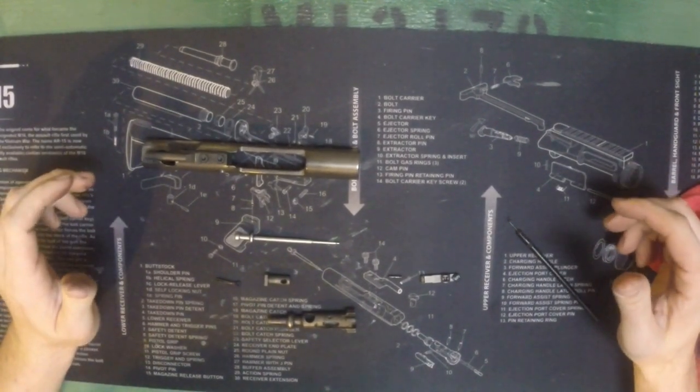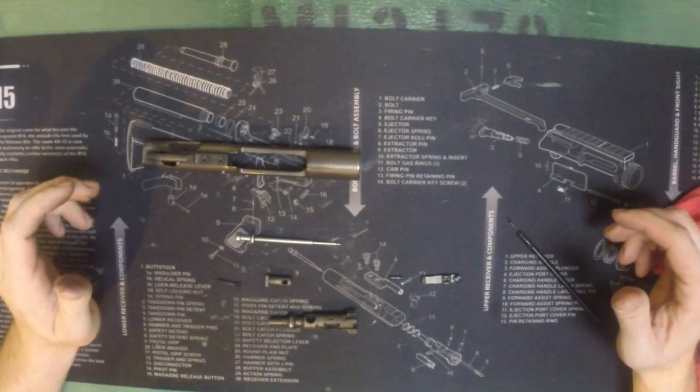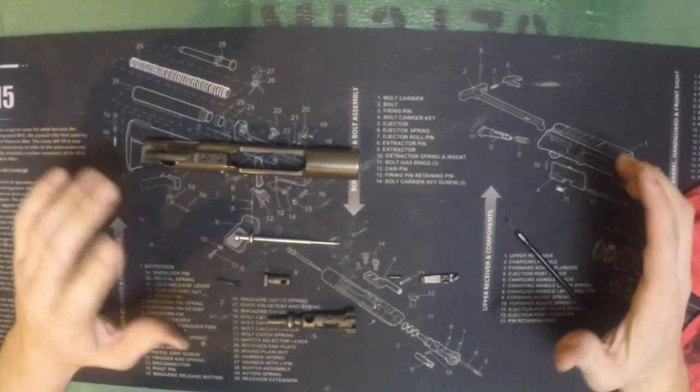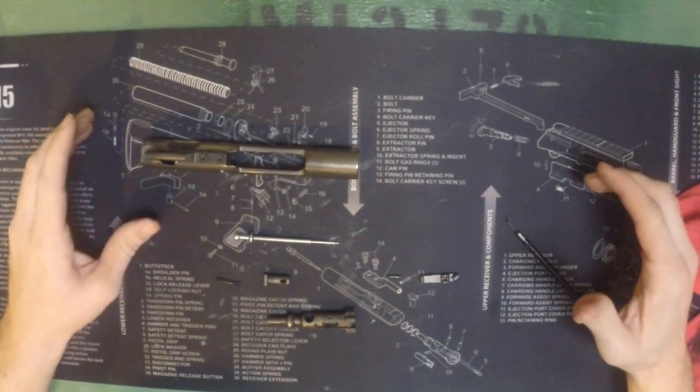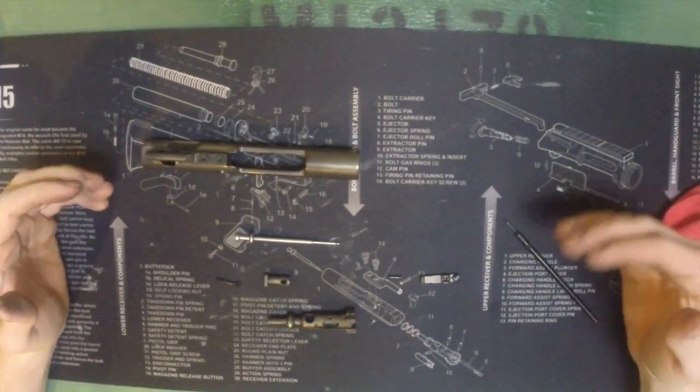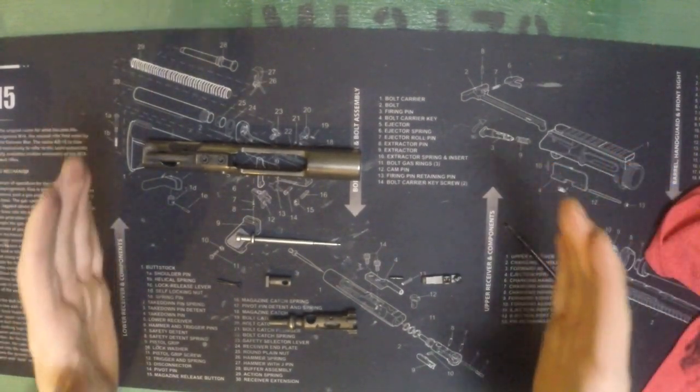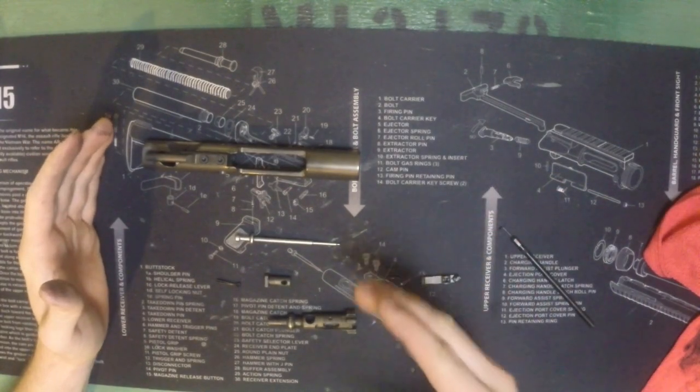We got everything taken apart and wiped down, and we're gonna start polishing some of this stuff. But I wanted to point something out first—a lot of people are kind of skittish when it comes to a bolt carrier group, and I think it's because when you buy a bolt carrier group, they ship it as the bolt carrier group.